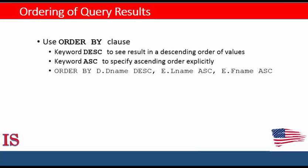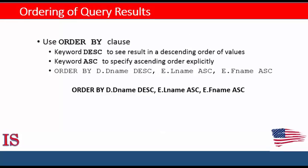SQL allows the user to order the results of a query by the values of one or more attributes that appear in the query result, by using the ORDER BY clause. The default order is ascending order of values. We can specify the keyword DESC if we want to see the result in descending order. The keyword ASC can be used to specify ascending order explicitly, even though ascending is the default.